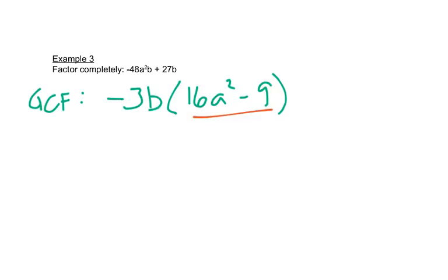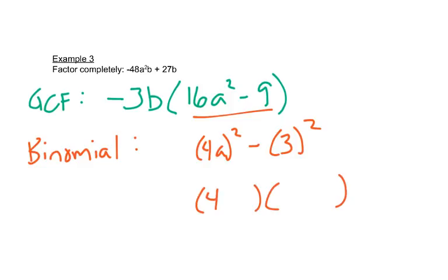So now we're looking at what's inside here. This is a binomial. So remember for a binomial, we're trying to see, do we have something squared minus something else squared? So sixteen, we have four times four. A squared, we have A times A. Nine, we have three times three. So we can write our two sets of parentheses. We put four A at the beginning of both, three at the end of both, one plus, one minus. And then this minus three B that was out in front just needs to stay out in front.